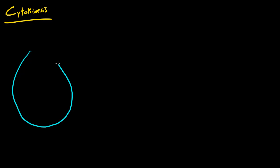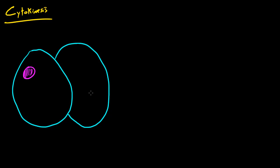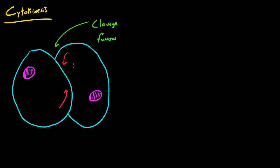In animal cells, at the end of mitosis we have pretty much one adjoining cell but it has two nuclei thanks to mitosis. The portion of the cell where it is going to split is called the cleavage furrow. The cleavage furrow is the little indentation in the cell where it's going to split in half. Proteins are going to come in and they're going to act like a belt around the cell.